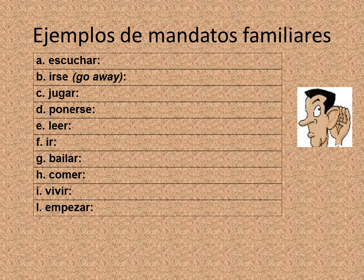So we've got escuchar, which is escucha — listen. And irse, which is 'go away.' That's a good one to probably know for your little sibling. Vete. You take and conjugate ir, which is irregular, to ve — our friend ve. And the te, because it's a tú command and it's reflexive, we attach it to the end. So when we're commanding people to do things, if it's reflexive, you attach a te to the end.